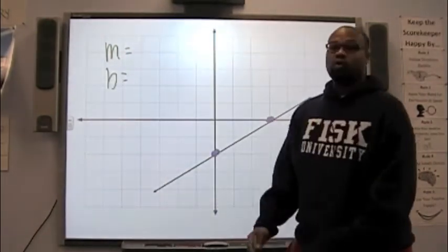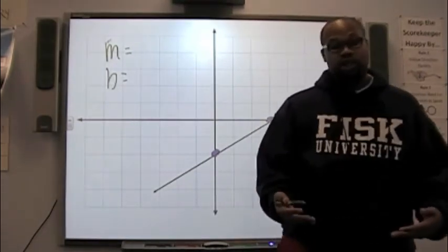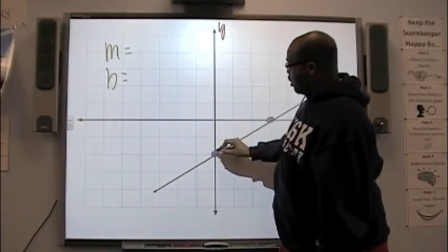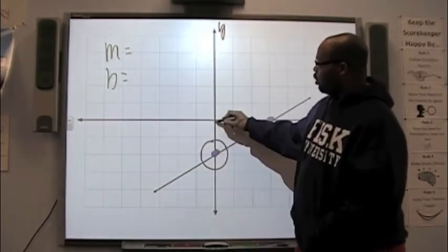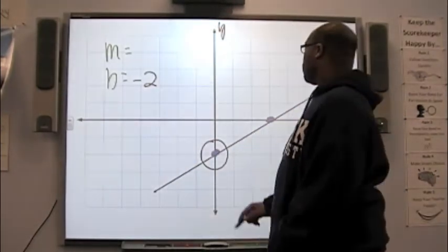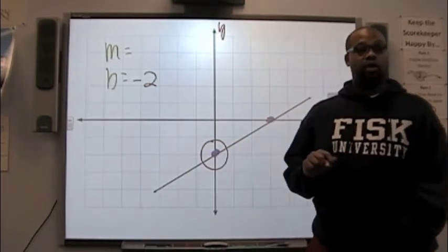If we're looking for the y-intercept, it's easy to find. You look for where your graph crosses the y-axis. So, I'm going down the y-axis, looking, looking, looking, looking, it crosses right here. So, I notice it crosses at negative 1, negative 2. B is negative 2. I'm going to use this point and this point to find my slope.